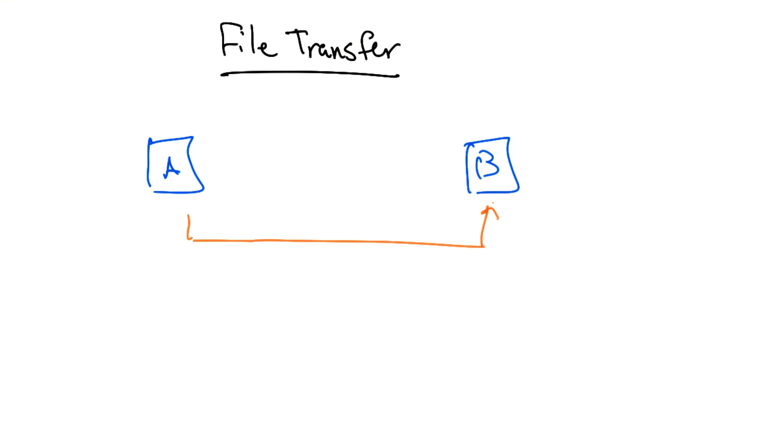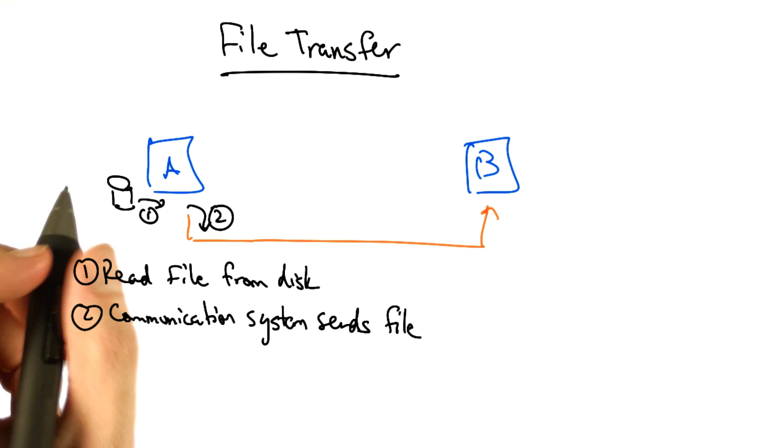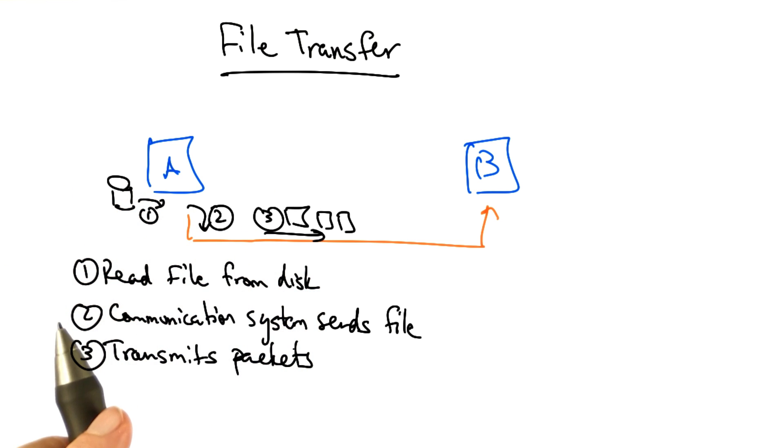Let's suppose that computer A wants to send a file to computer B. The file transfer program on A asks the file system to read the file from the disk. The communication system then sends the file, and finally, the communication system sends the packets.